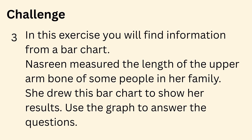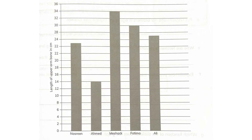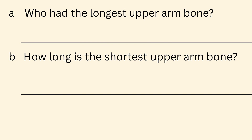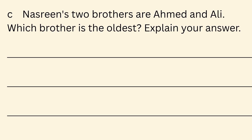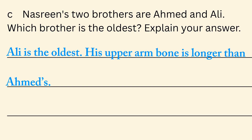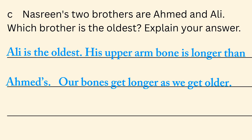Challenge 3. In this exercise, you will find information from the bar chart. Nasrin measured the length of the upper arm bone of members of her family. She drew this bar chart to show her results. Use the graph to answer the questions. A. Who had the longest upper arm bone? Meshach. B. How long is the shortest upper arm bone? Meshach. C. Nasrin's two brothers are Ackman and Ali. Which brother is the oldest? Explain your answer. Ali is the oldest. His upper arm bone is longer than Ackman's. Our bones get longer as we get older.